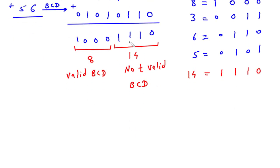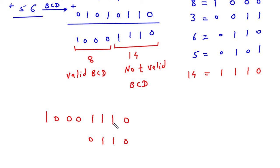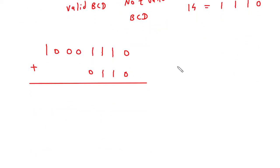To make the invalid group valid, we add 6 (0110) to it, while the valid group remains as is (1000). Adding 0110 to the invalid group: 0 plus 0 is 0, 1 plus 1 is 0 carry 1, 1 plus 1 plus 1 is 1 carry 1, and continuing. After completing the addition, we observe that no carry is generated.